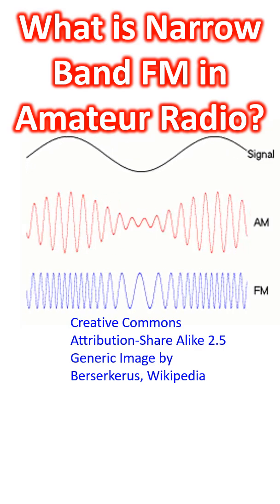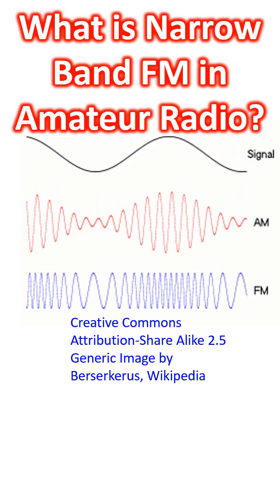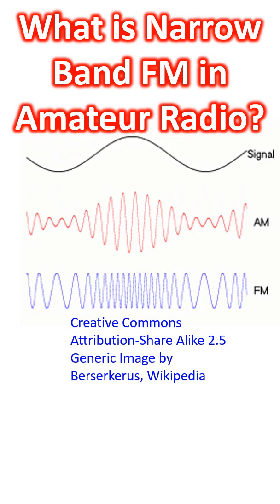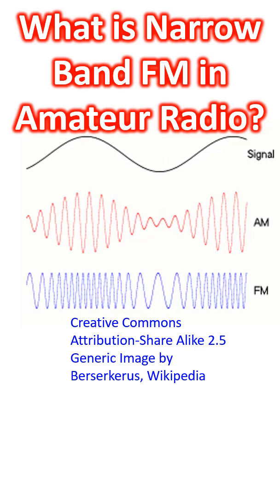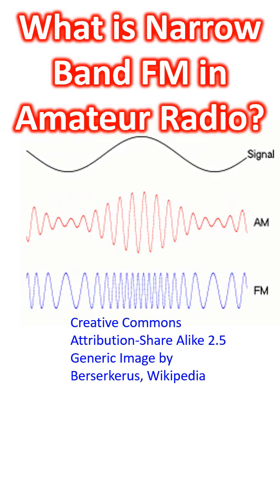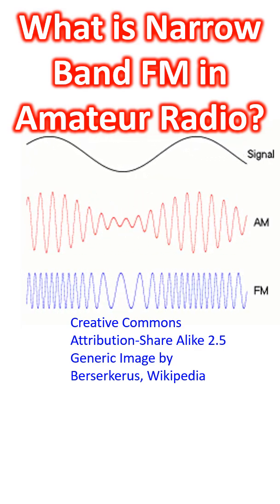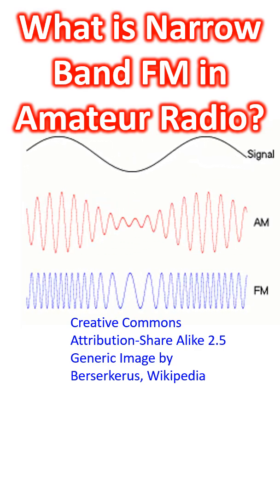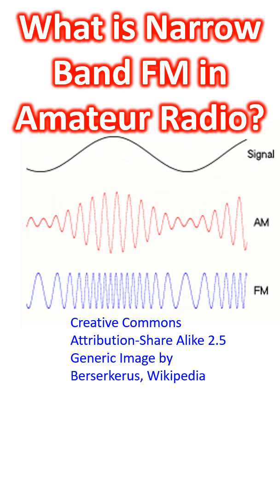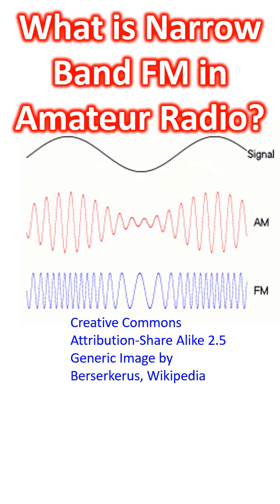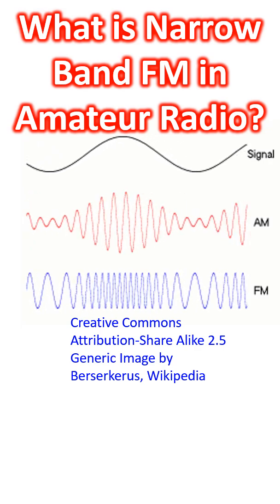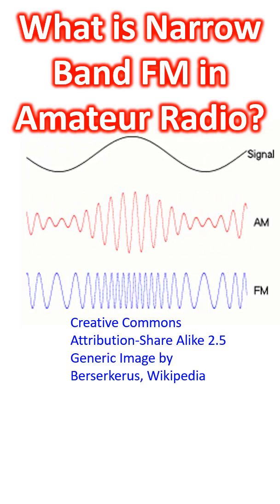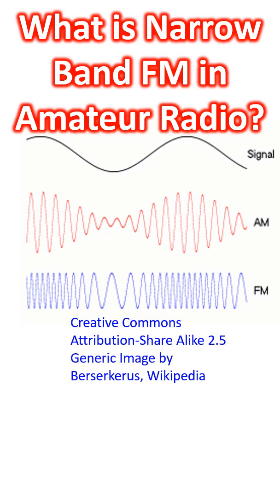As you are aware, FM or frequency modulation is the encoding of information in a radio frequency carrier wave by varying the instantaneous frequency of the wave according to the modulating signal, which is your audio in the case of amateur radio. This is in contrast with AM or amplitude modulation, in which it is the amplitude of the RF carrier wave that is changed according to the audio signal and not the frequency.